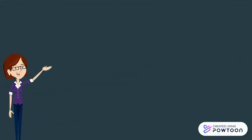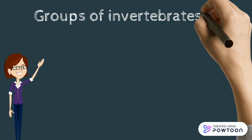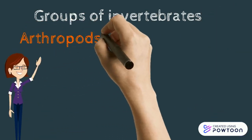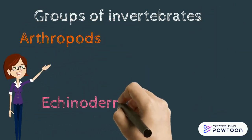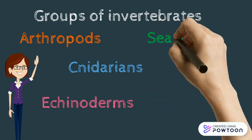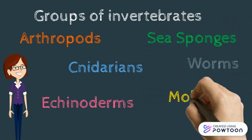There are six groups of invertebrates: arthropods, echinoderms, cnidarians, sea sponges, worms, and mollusks.